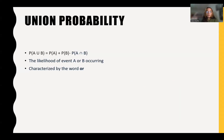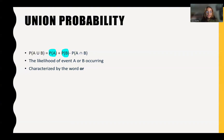Now let's talk about union probability. Union probability refers to the likelihood of event A or event B occurring. It's denoted by this formula: the probability of A plus the probability of B minus the joint probability of both A and B is going to equal the probability of the union of both events.